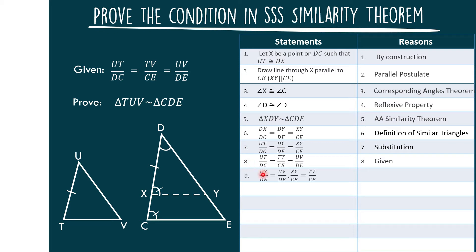Using statements number 7 and number 8, we have DY over DE is equal to UD over DE, as well as XY over CE is equal to TV over CE. By transitivity from statement 8, since DY over DE is equal to UD over DE, and XY over CE is equal to UT over DC, and UT over DC is equal to TV over CE — therefore, by transitivity, these two ratios are also equal.